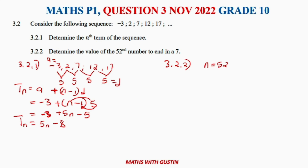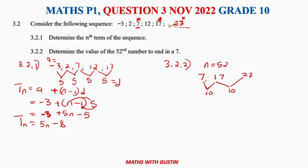For 3.2.2, we need to find the 52nd number ending in 7. Looking at the sequence, 7 ends in 7, then 17 ends in 7. 17 − 7 = 10, so the next is 27, then 37, and so on. This gives us a new sequence of numbers ending in 7: 7, 17, 27, 37... with first term a = 7 and common difference d = 10.